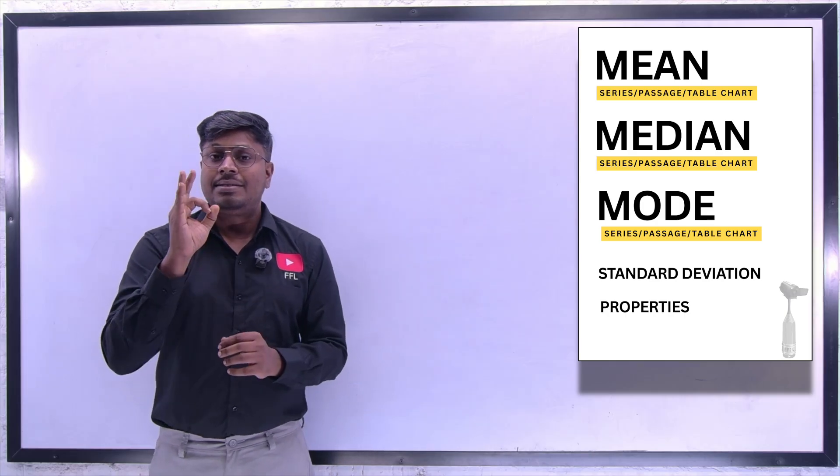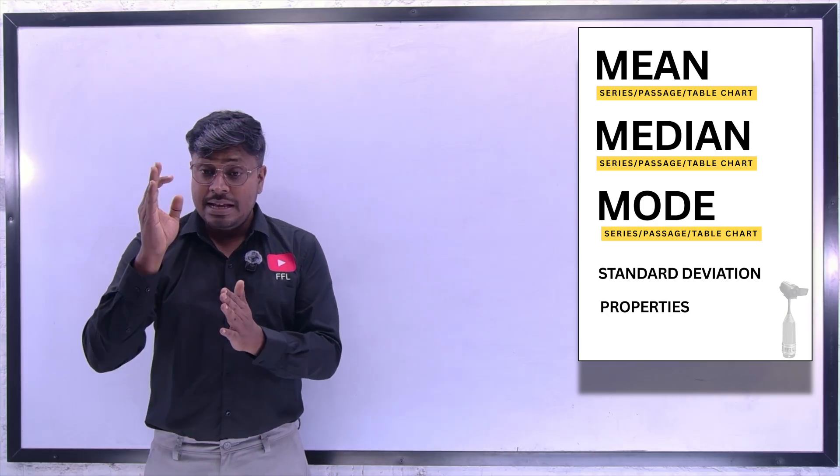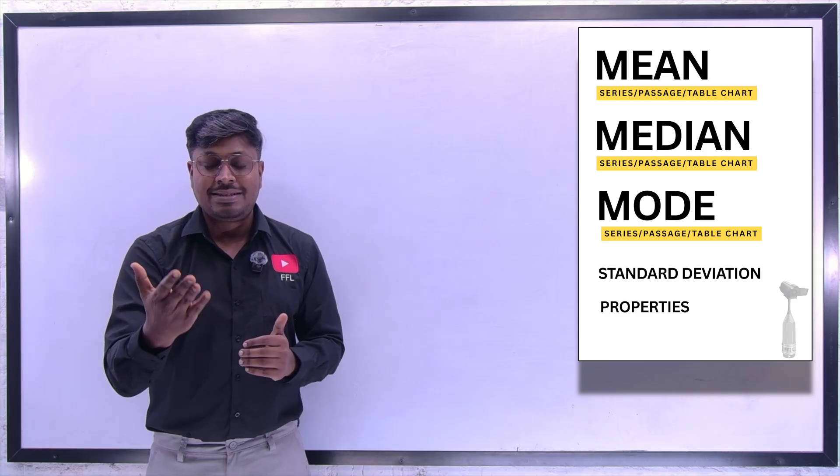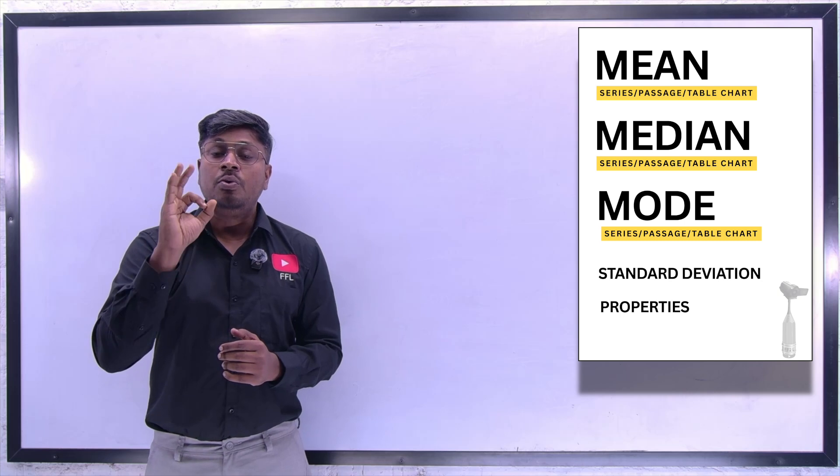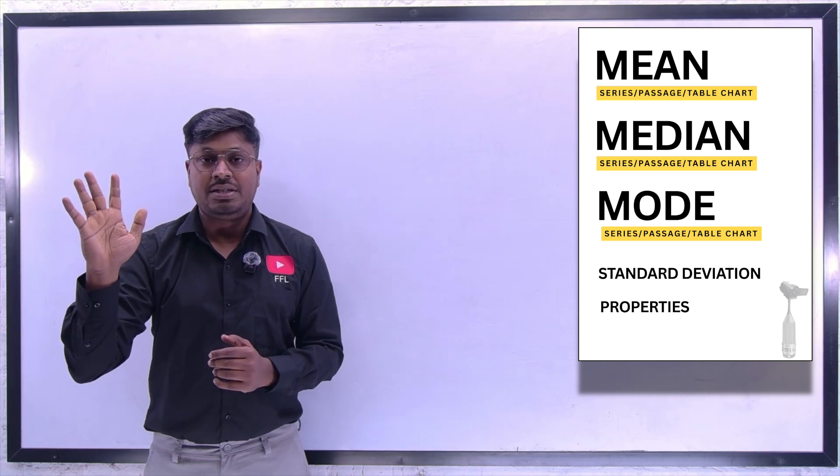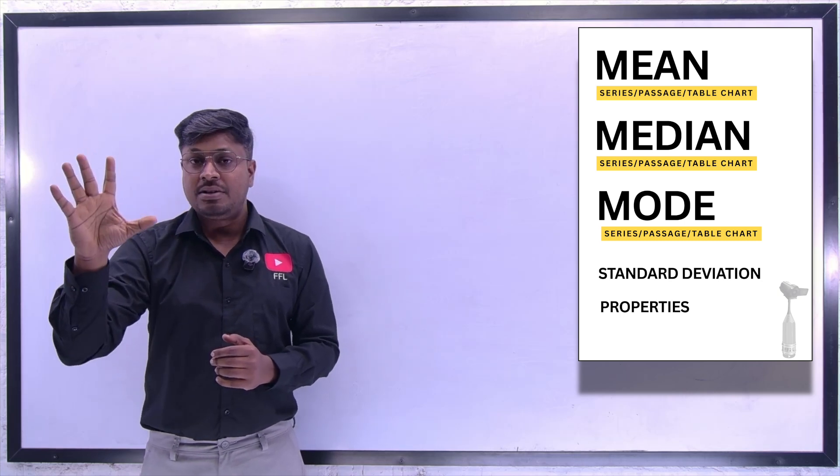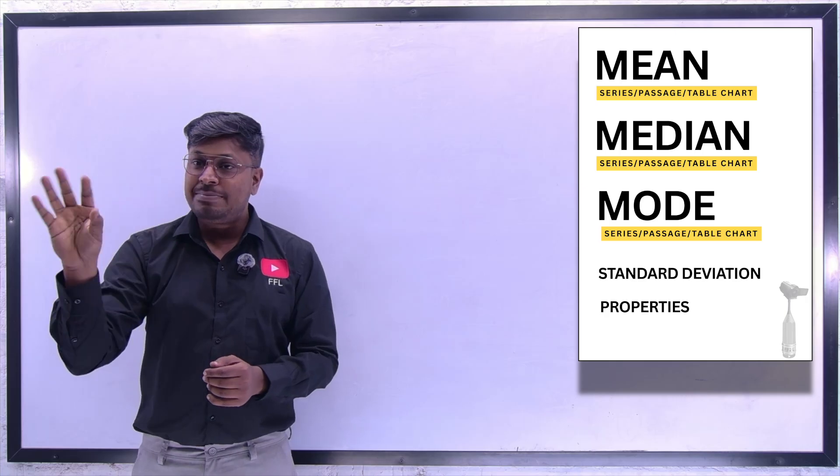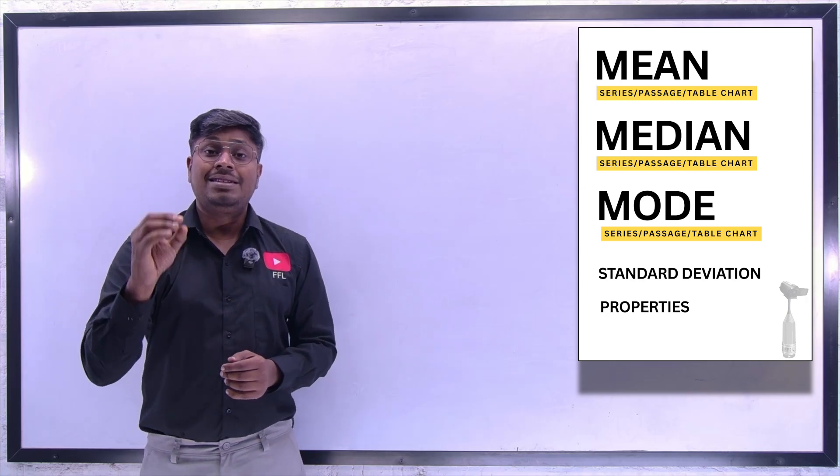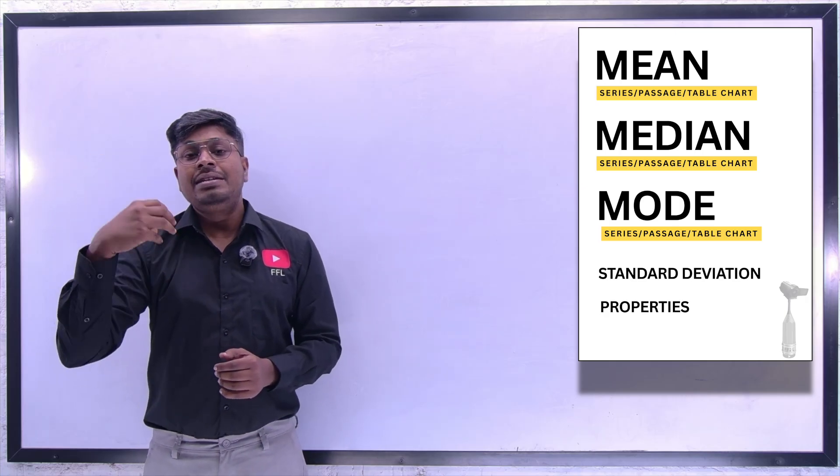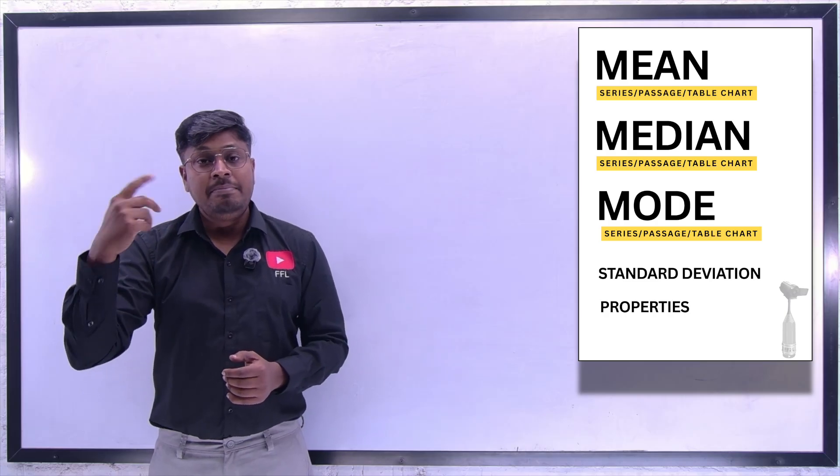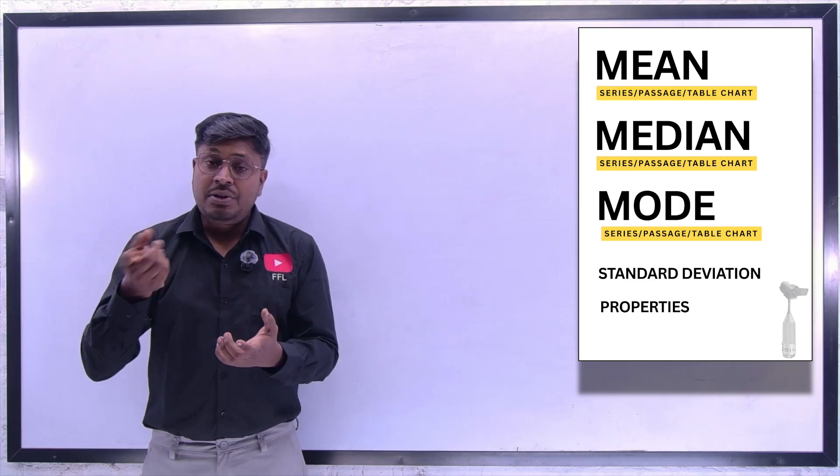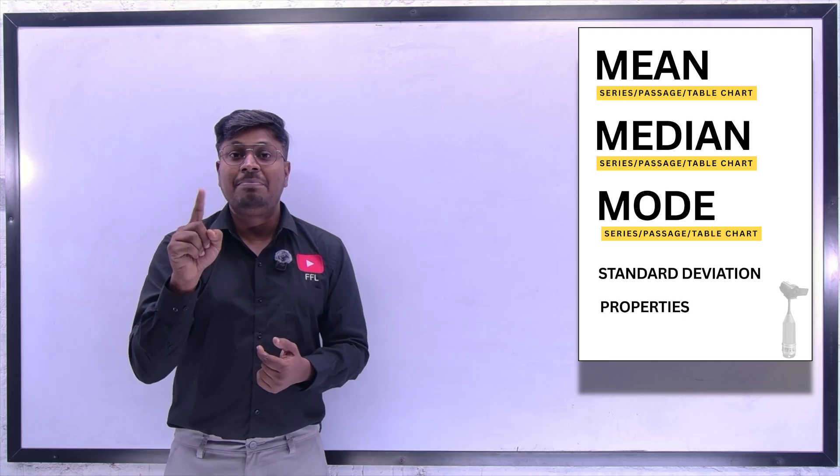So for these three major category topics—mean, median, and mode—for every section you have to know how to solve all three types of questions. First type: passage based question. Second type: series based question. And third type: chart based question. Even in some chart values you can see some values will be missing in the chart itself. That too you should know how to solve questions on mean, median, and mode.